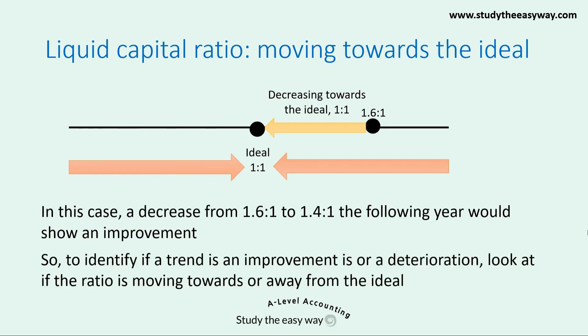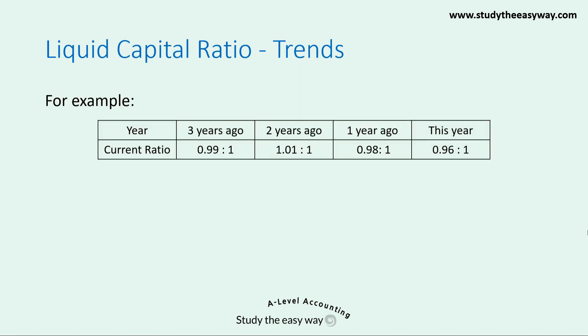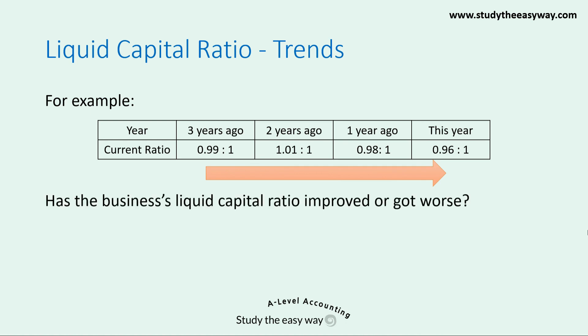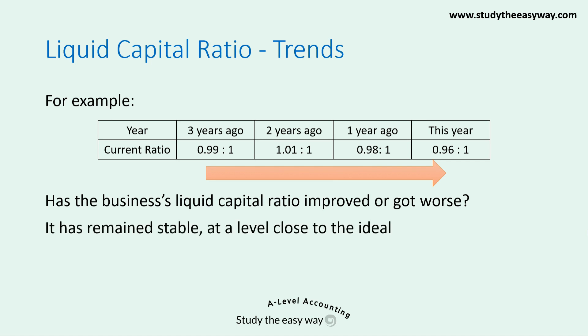To identify if a trend is an improvement or a deterioration, look at whether the ratio is moving towards or away from the ideal level. Here's an example — let's look at the trend over time. Is this an improvement or a deterioration in the liquid capital ratio? The answer is that it has remained stable. Although there is a slight reduction from 0.99 to 0.96, this is only a small change, and the level remains basically stable and very close to the ideal.